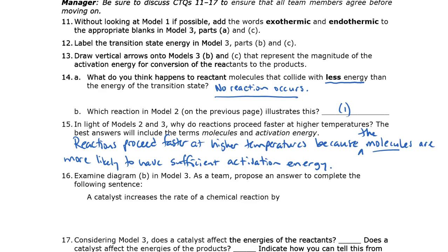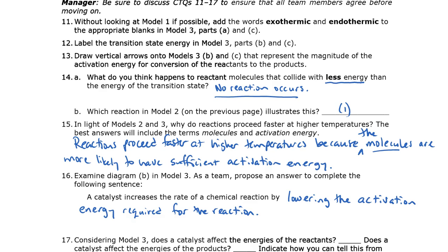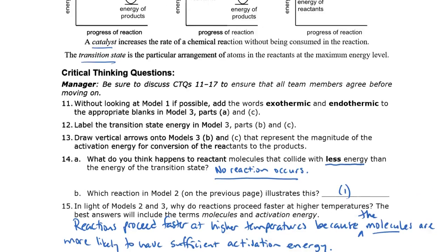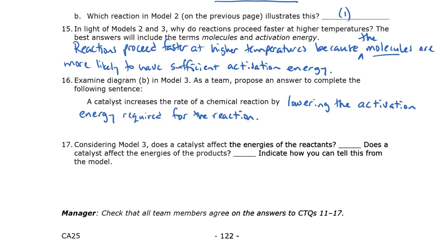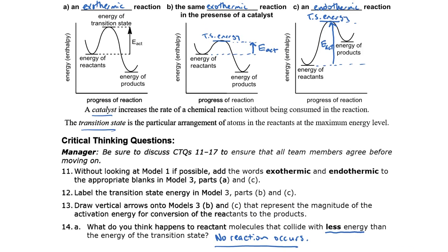Question 16: examine diagram B in model 3 and complete the sentence: a catalyst increases the rate of a chemical reaction by... lowering the activation energy required for the reaction. If you don't have that, look at diagrams A and B — the only difference is the energy of the transition state. So it's also correct to say a catalyst increases the rate by lowering the energy of the transition state, which is the same as lowering the activation energy.